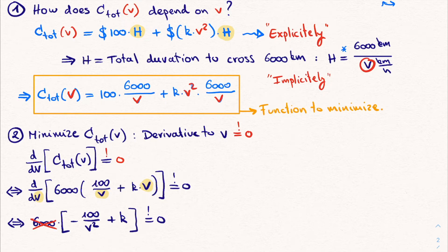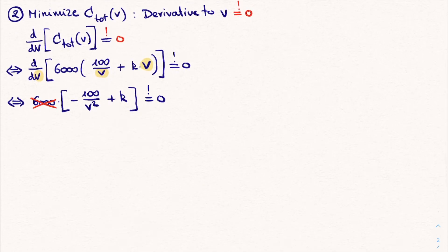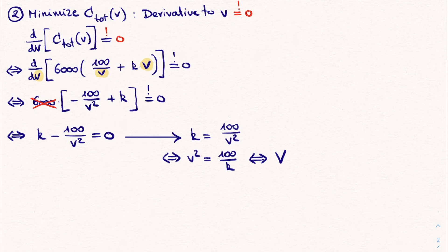And at this point, we simply have an algebraic equation in the unknown V. And since we equate this to 0, we can drop this 6000. Rewriting the equation, we get K minus 100 divided by V squared is equal to 0. Getting each term to one side of the equality sign, we get K is equal to 100 divided by V squared, or V squared is 100 divided by K. Taking the square root on both sides, we finally find that our velocity V that minimizes our cost function is equal to the square root of 100 divided by K.